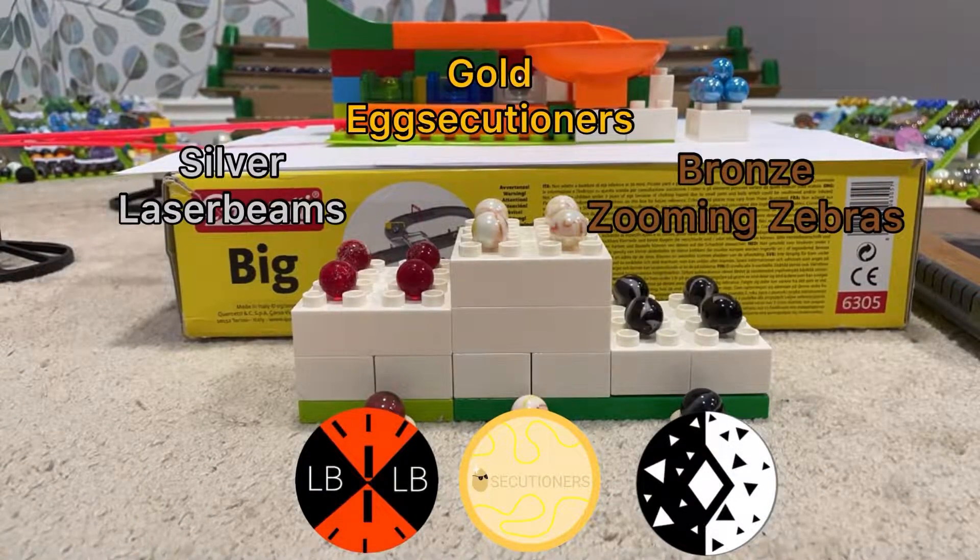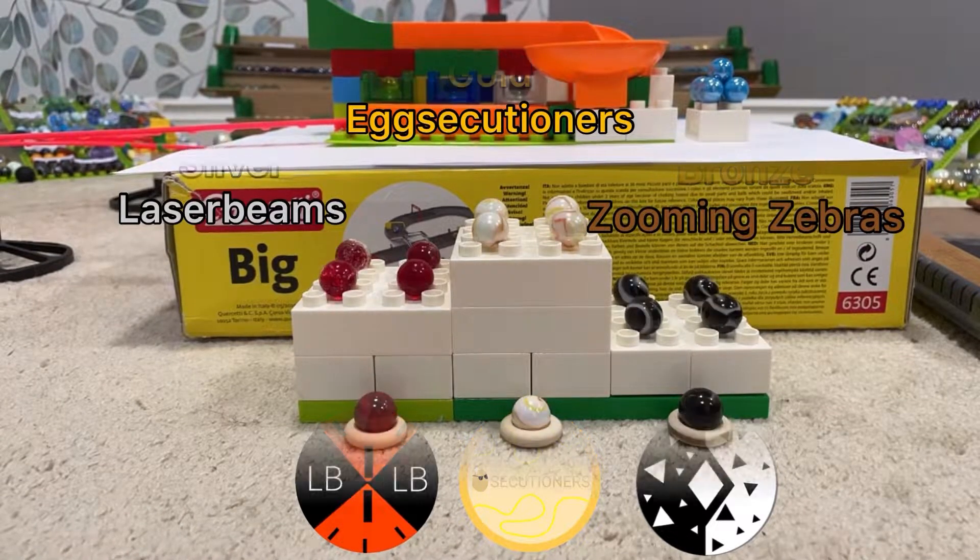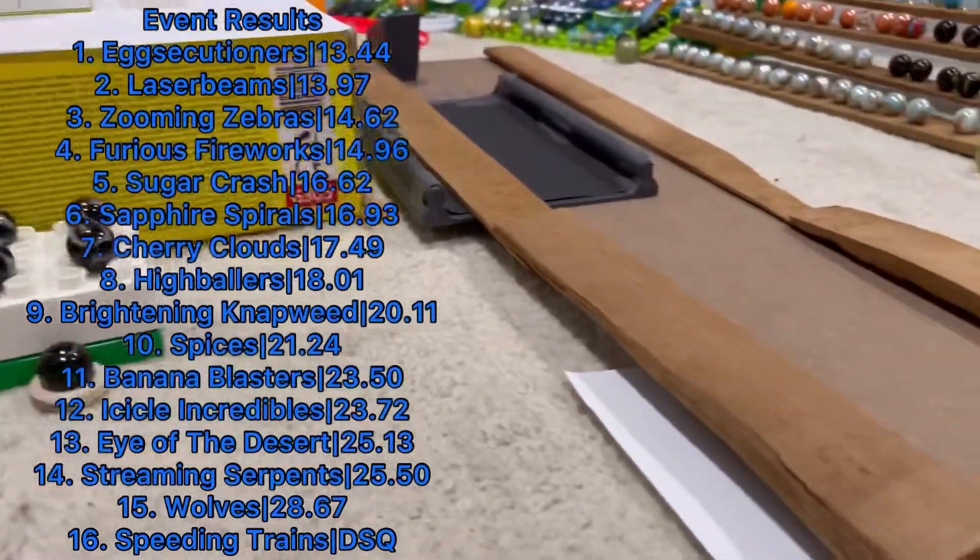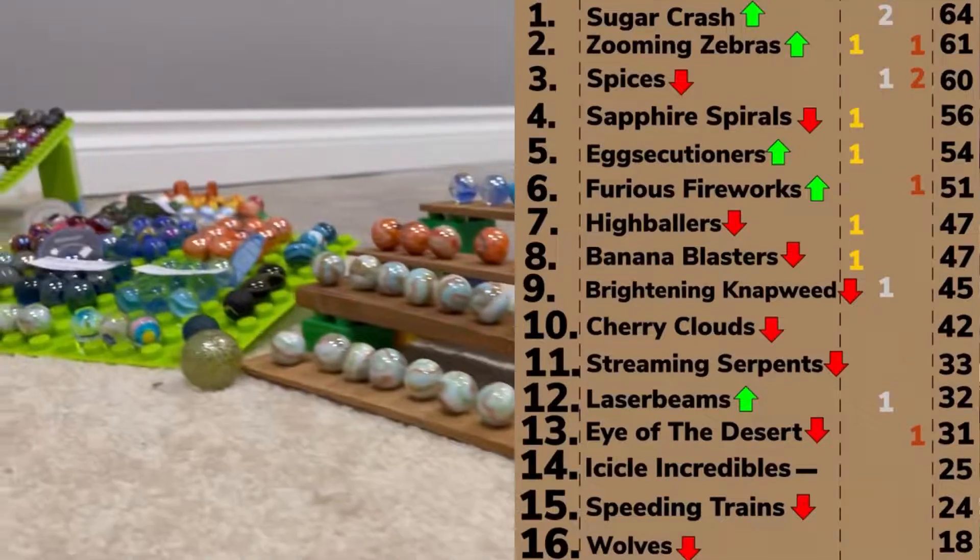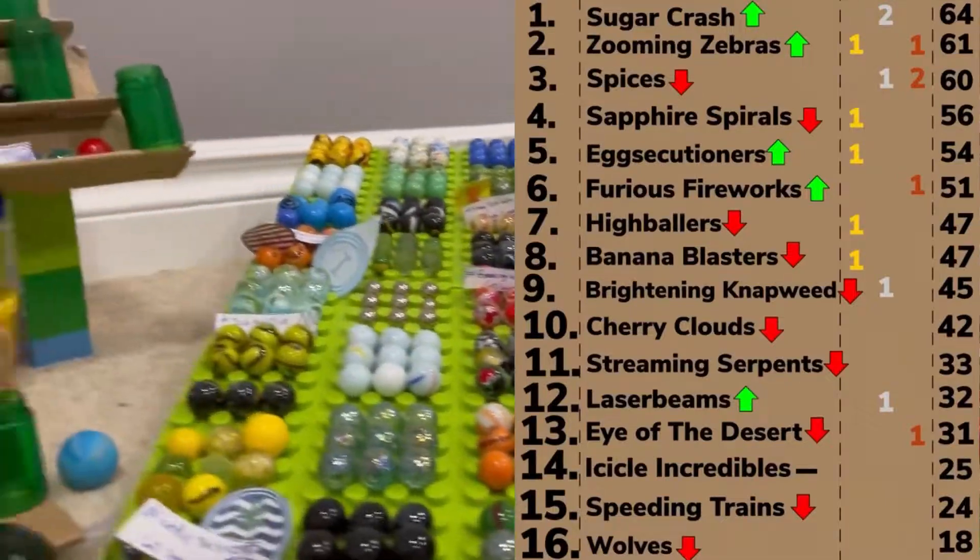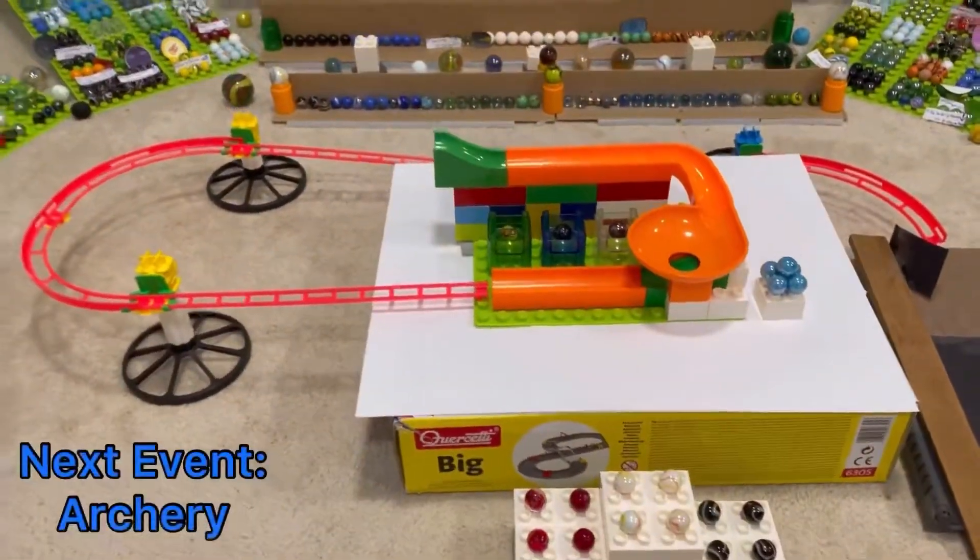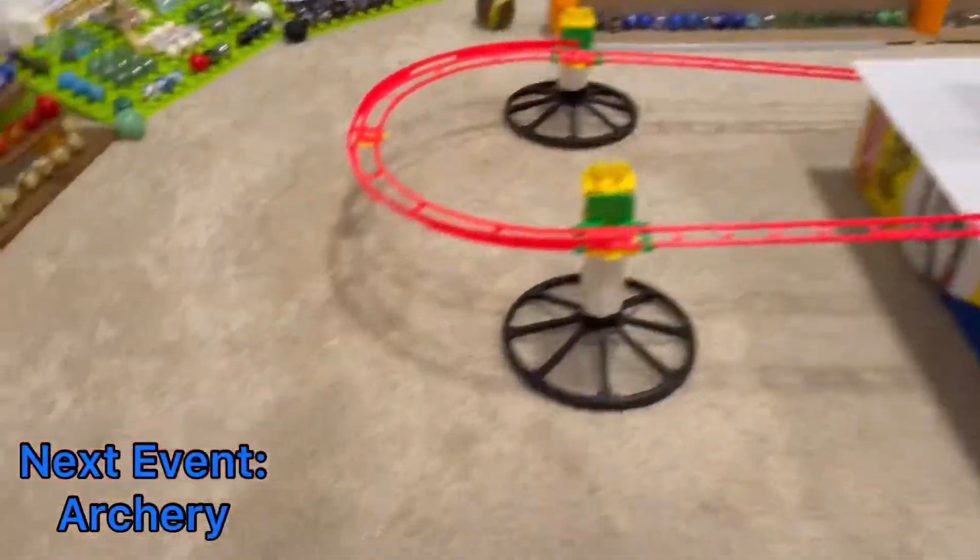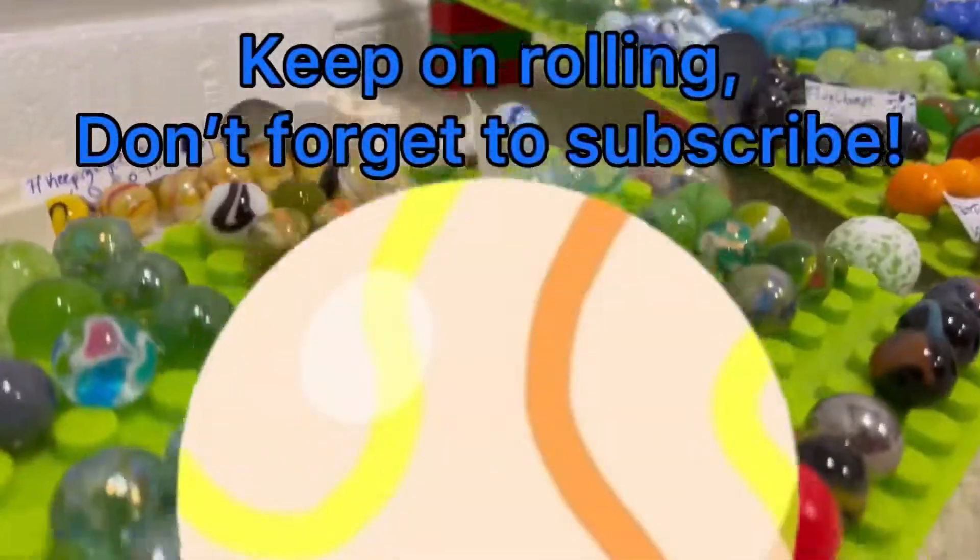But on the podium, it's Zooming Zebras, Laser Beams and Executioners who get the medals today. But how does this shake up the standings? Sugar Crush taking the lead now with 64 points. Wolves in last have to make a recovery, maybe in the next event. That's been archery. We hope to see you then. And until then, don't forget to keep on rolling.